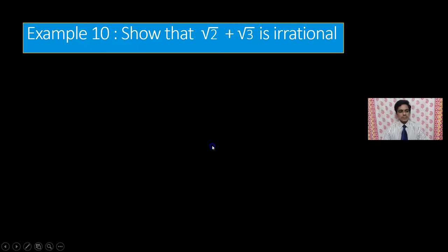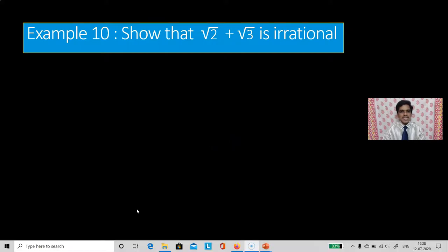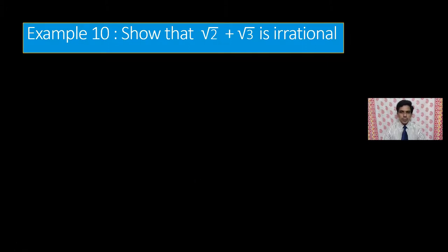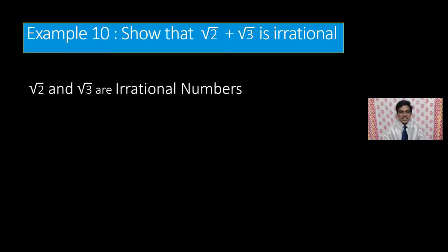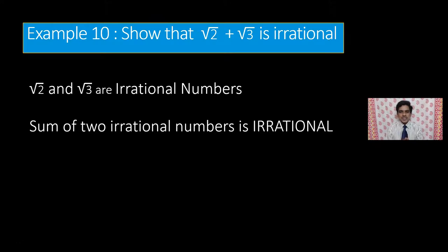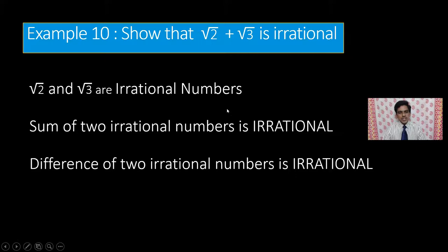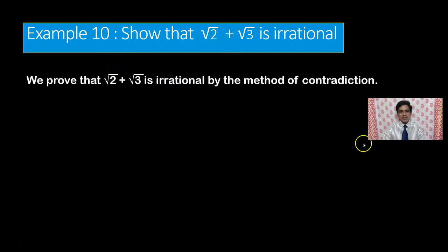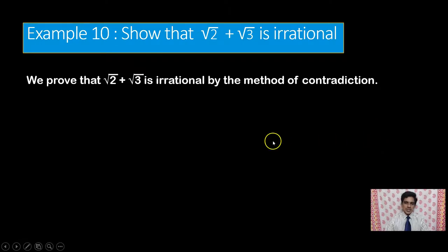Now let us solve example 10. Show that square root of 2 plus square root of 3 is an irrational number. We already know that square root of 2 is irrational and square root of 3 is also irrational. Here we have the addition of two irrational numbers, and we are going to prove that the sum of two irrational numbers is irrational. The same logic applies to differences as well — the difference of two irrationals is also irrational. We prove this by the method of contradiction.